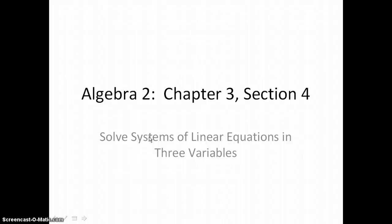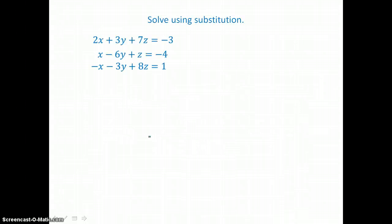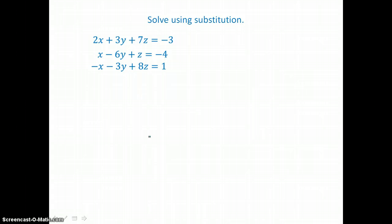In section 3.4, you will solve systems of linear equations in three variables. In order to find three unknowns, we need three equations. So in this system, we're going to use substitution to solve for our three unknowns.